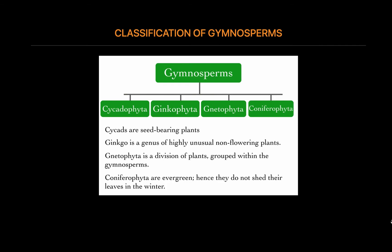Gnetophytes usually consist of tropical plants, trees, and shrubs. They are characterized by flowery leaves that have a soft coating. Gnetophytes differ from other members of this class as they possess vessel elements in their xylem. Coniferophyta is the most commonly known species among the gymnosperms family. They are evergreen, hence they do not shed their leaves in the winter. These are mainly characterized by male and female cones that form needle-like structures.